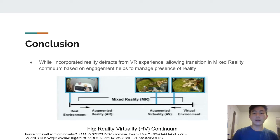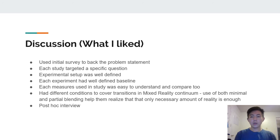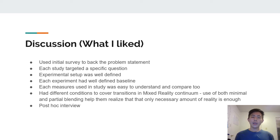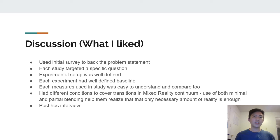The overall conclusion from this paper is that incorporating reality detracts from the VR experience, but when there is a transition in the mixed reality continuum, the user can better manage the things around them. I really liked this paper because the authors presented their problem statement backed up by an initial survey of 108 respondents. Each study targeted a specific question with well-defined experimental setups and baselines. The measures used were easy to understand and compare, and they covered different conditions across the transition in the mixed reality continuum — using both minimal and partial blending helped them realize that only necessary amounts of reality are sufficient.